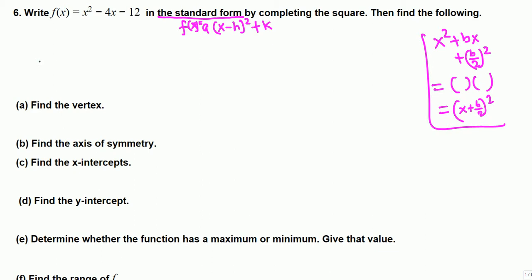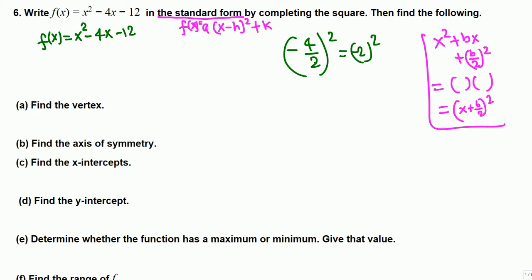So we have f(x) equals x squared minus 4x minus 12, so b is negative 4. We need to add half of b squared: b is negative 4, so negative 4 over 2 is negative 2, and negative 2 squared is positive 4. So we need to add 4 to complete the square.